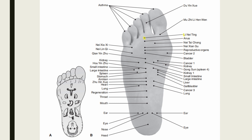Li Nei Ting is located opposite Stomach 44 (Neiting) at the bottom of the foot. Indications include child convulsions. Tu Yin Shui is located at the midpoint of the transverse crease of the distal interphalangeal joint of the second toe, on the plantar surface. Indications include herniation, irregular menses, and difficult labor.